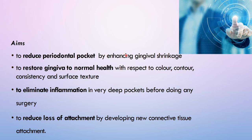The second aim is to restore gingiva to normal health with respect to color, contour, consistency, and surface texture through healing — by formation of long junctional epithelium or repair. The third aim is to eliminate inflammation in very deep pockets before any surgery, as a preparatory stage before flap surgery. The fourth aim is to reduce loss of attachment by developing new connective tissue attachment, thereby arresting the disease.